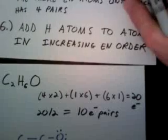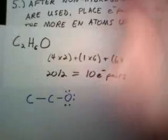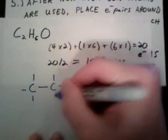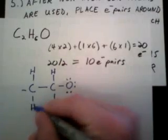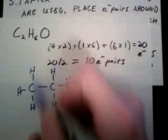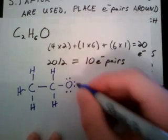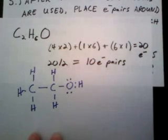Step six says to add hydrogen atoms to atoms in increasing electronegativity order. Well, we have six hydrogen atoms, right? Six of them. So if we start with the less electronegative carbons, we're going to end up with five of those hydrogens used up. So we have one, two, three, four, five. And the last one has to go somewhere, so I'm just going to put it on the oxygen.